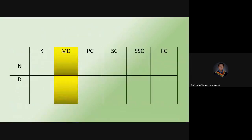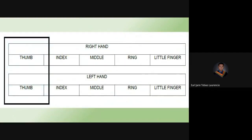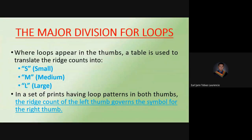This is the location of the major division. Take note that in major division, the fingers we are using are your right thumb and your left thumb — both thumbs. Now, if the patterns in both thumbs are loops, here are the rules: a table is used to translate the ridge count into S, M, L — small, medium, large.